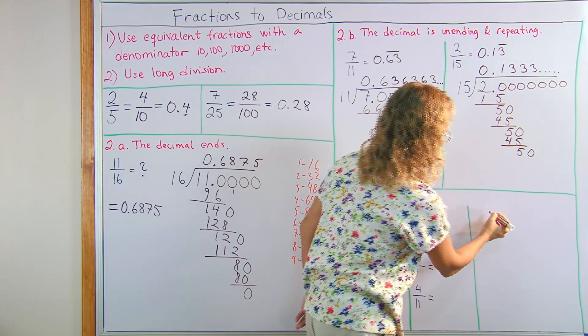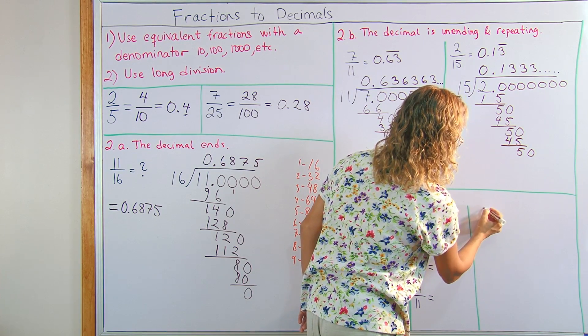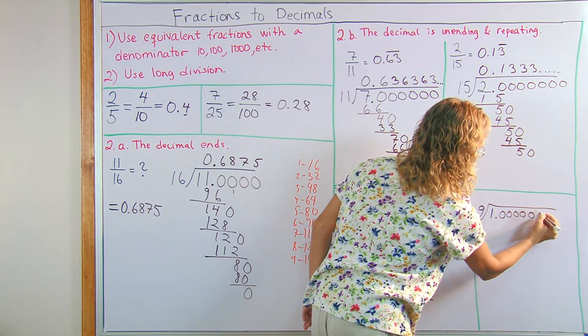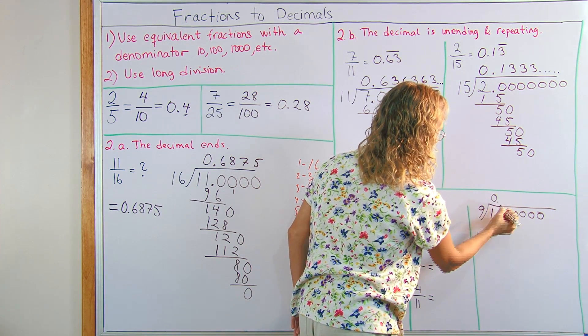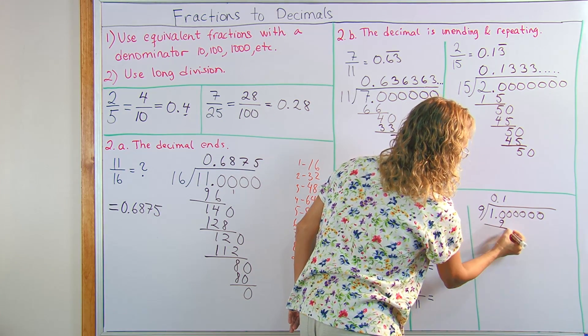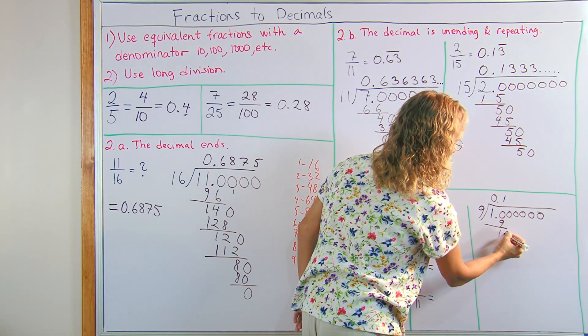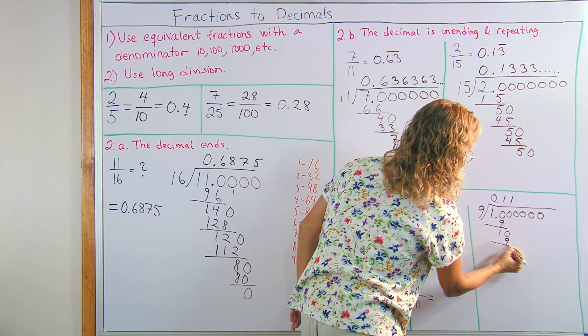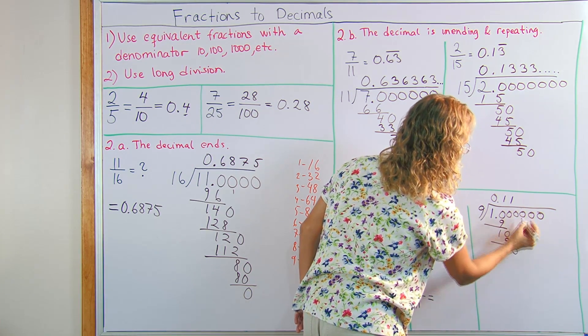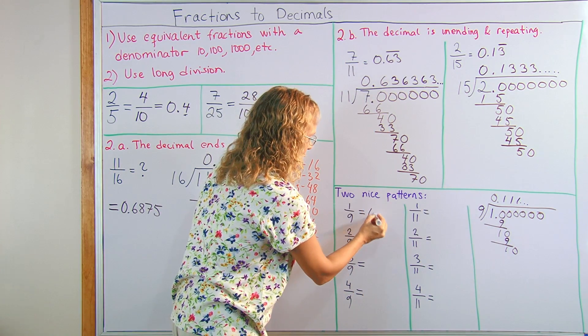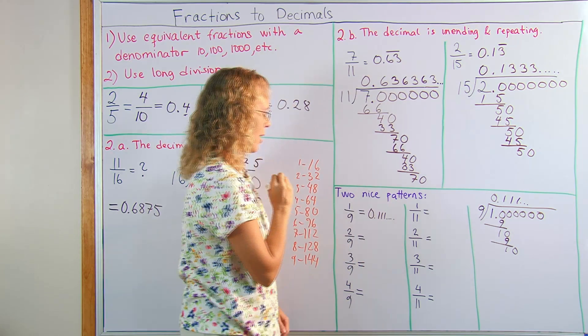1 divided by 9 over here. Let's see. 9 goes into 1 zero times. 9 goes into 10 one time. 1 times 9, 9. Subtract, 1. Then drop a 0, 10. It goes once there. 1 times 9, 9. Subtract, 1, 0. It's going to repeat once. 0.1111111.